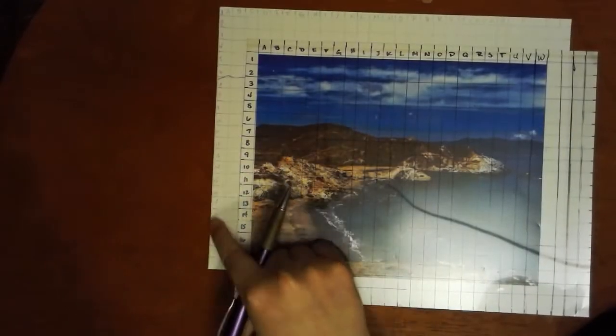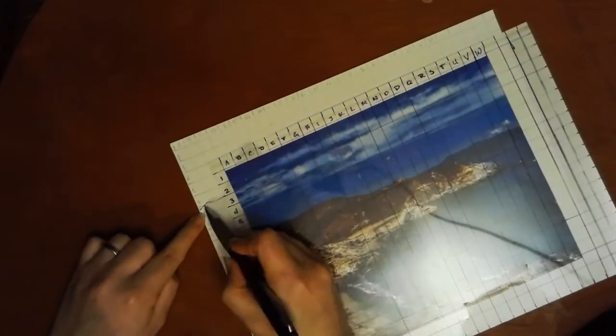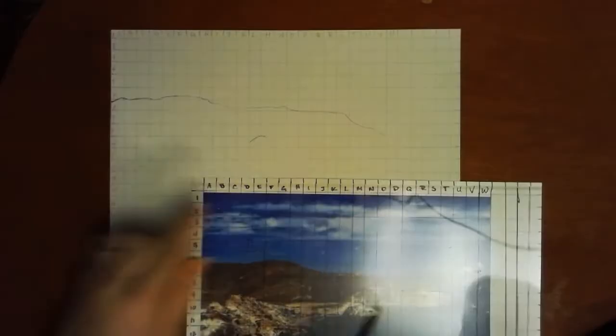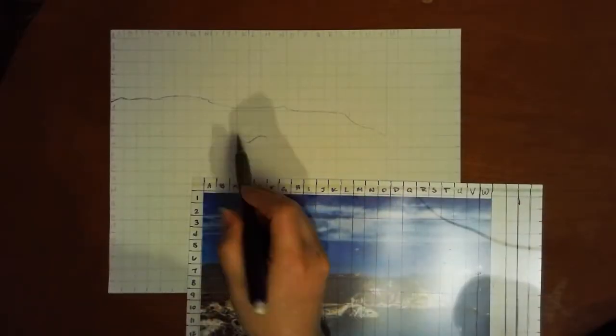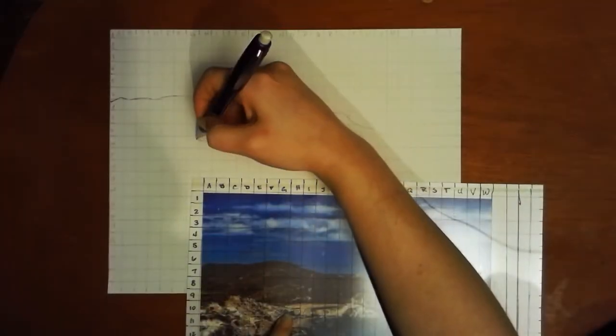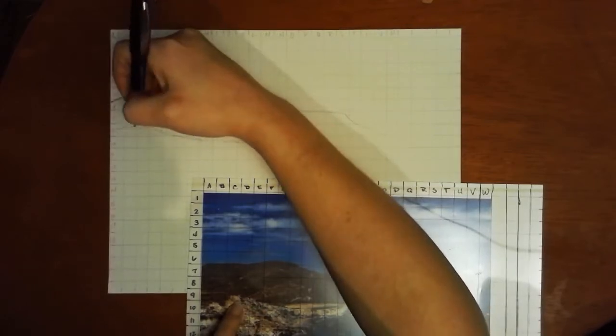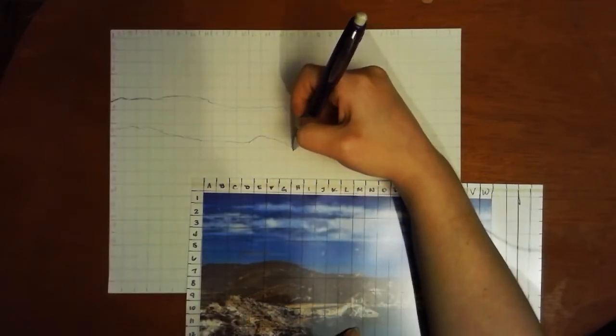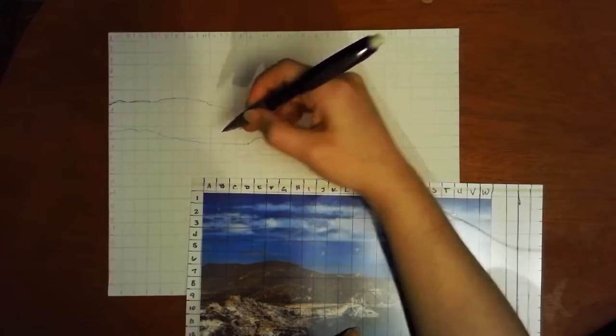You are also going to start transferring over your marks: A, B, C, D, all the way across the top until you reach the end of your image, and then 1, 2, 3, all the way across on the left side from the top to the bottom of your image.